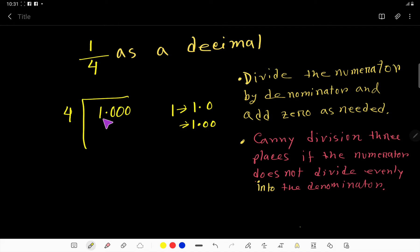So 4 goes into 1 how many times? Zero times. Now we multiply this quotient by the divisor: 4 times 0 is 0. If you subtract, you get 1. 4 doesn't go into 1, so we bring down this 0. Now we have the decimal point here, so the decimal point will come here in the quotient.